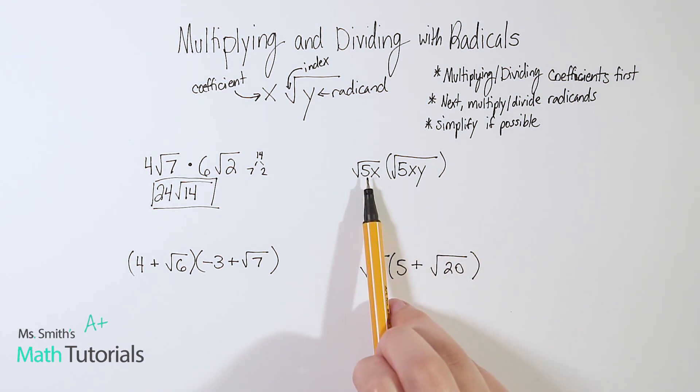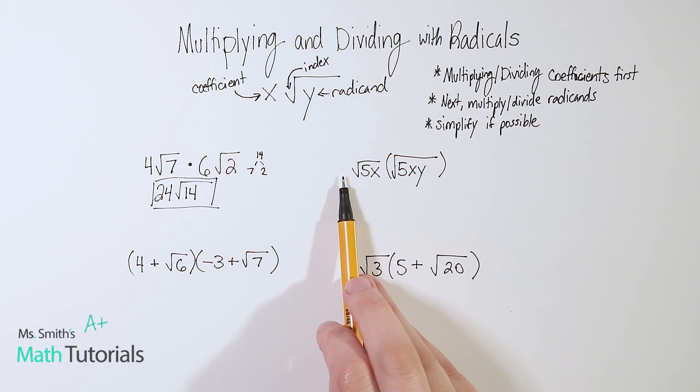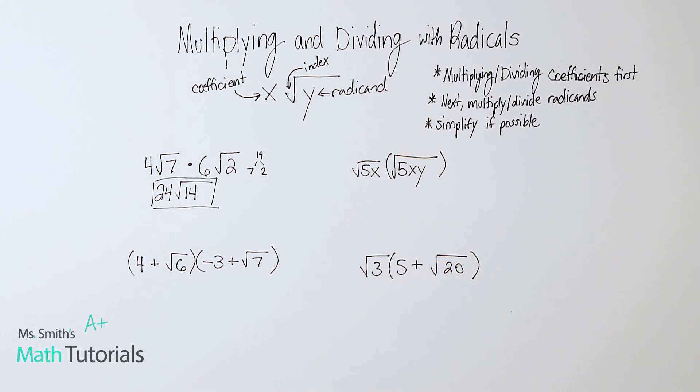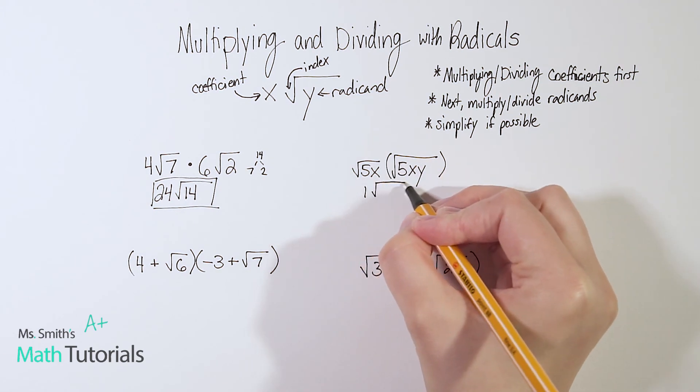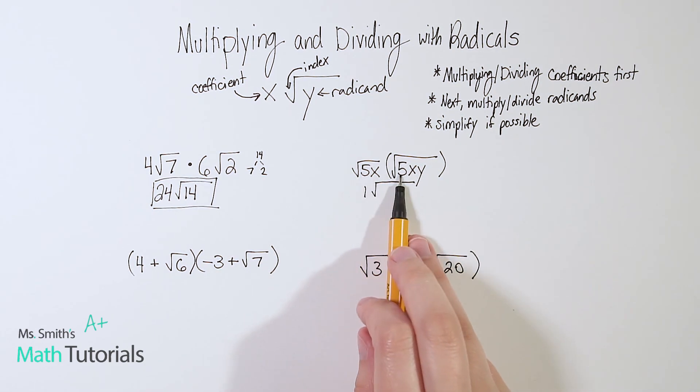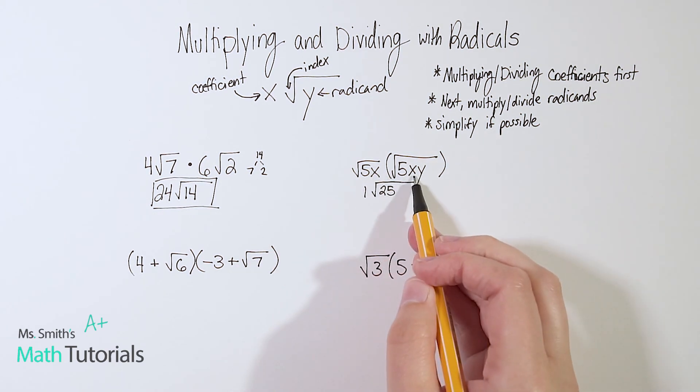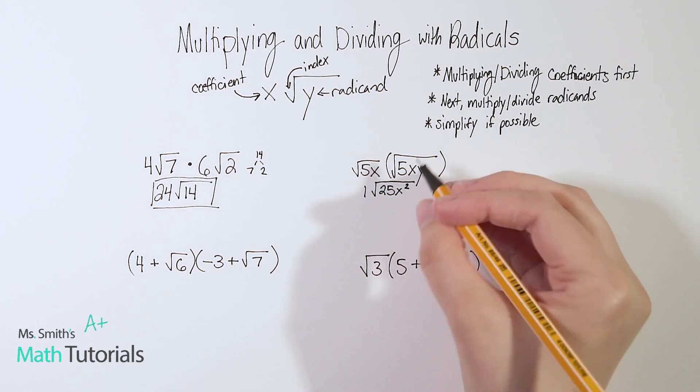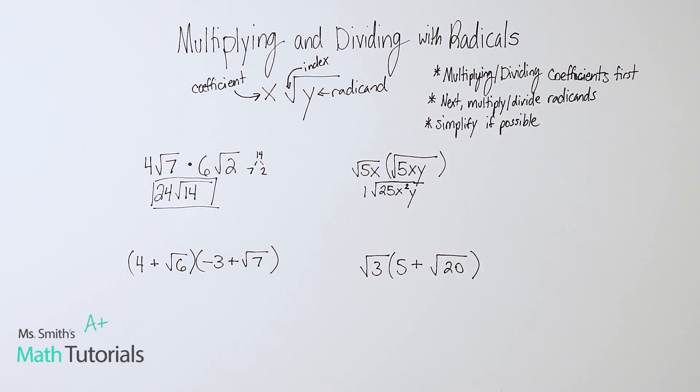Now for this one, I've got square root of 5x times square root of 5xy. In this case, my coefficient is a 1. It's an understood 1 out here and an understood positive 1 out here. So 1 times 1 is just 1. And then underneath the radical, 5 times 5 is 25, x times x is x squared. A little review of our exponent rules there. When we multiply using exponents, we add the exponents. And then I don't have a y here, but I do have one here. So that one just comes down.